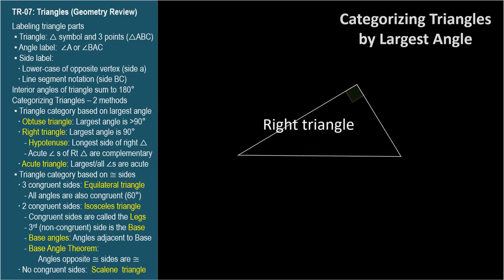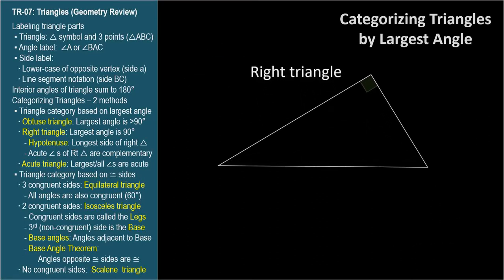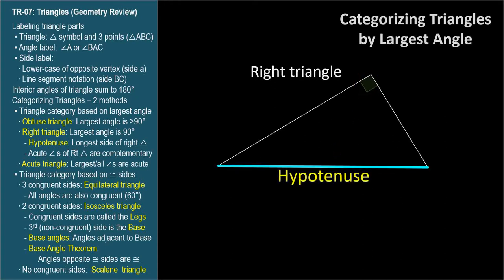Right triangles are special and we'll use them a lot in trigonometry. There's a special name for the longest side of a right triangle: the hypotenuse. The hypotenuse is the longest side of a right triangle, always the side opposite the right angle. The word hypotenuse is reserved for right triangles.